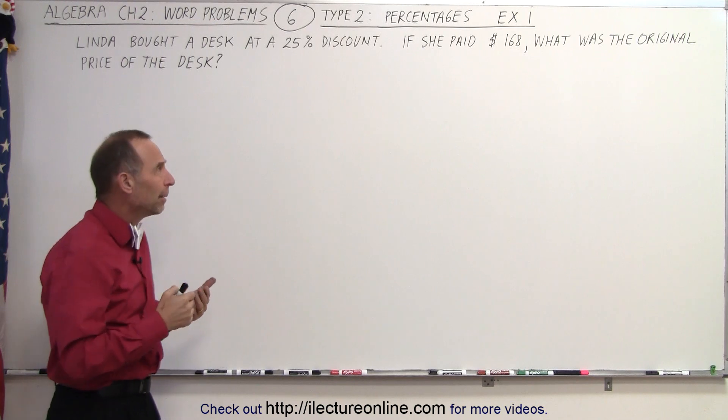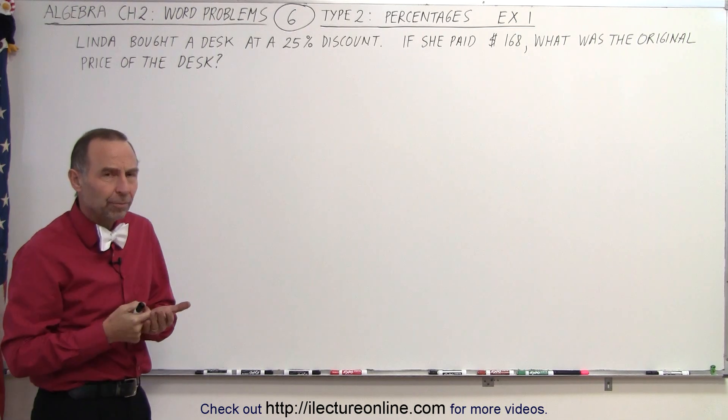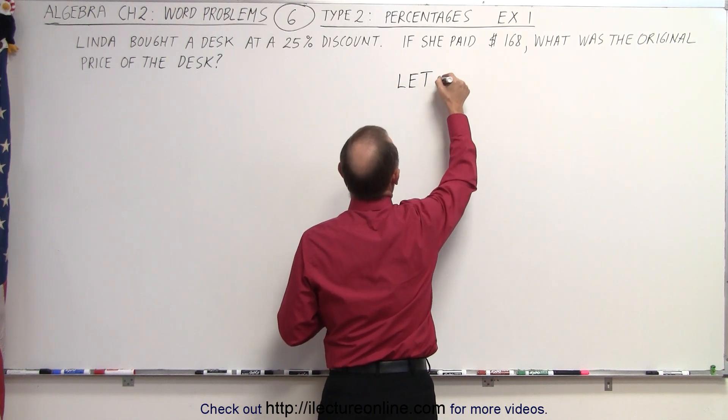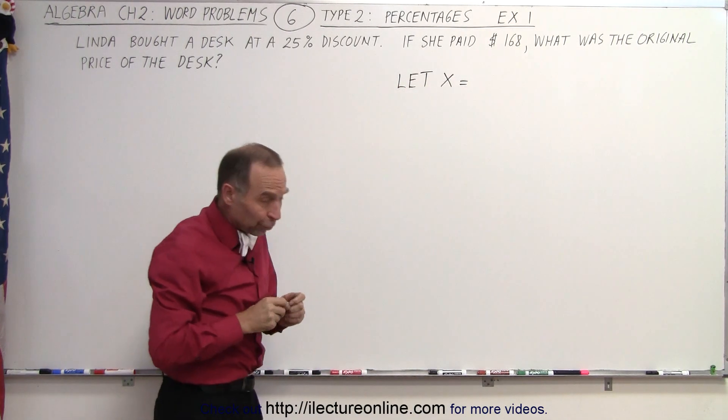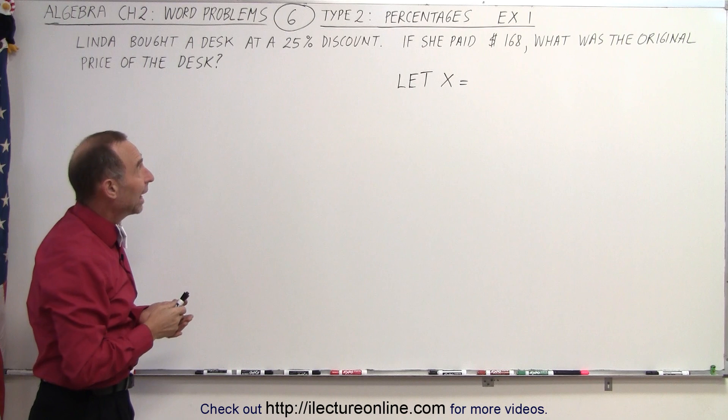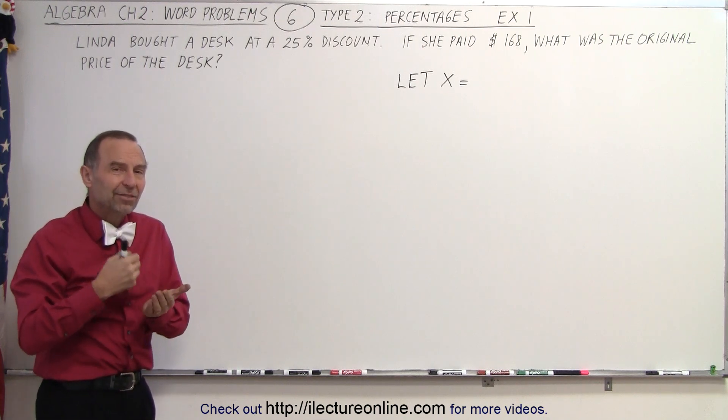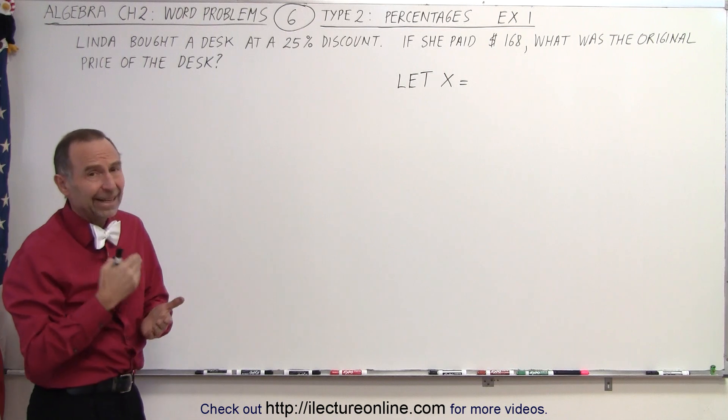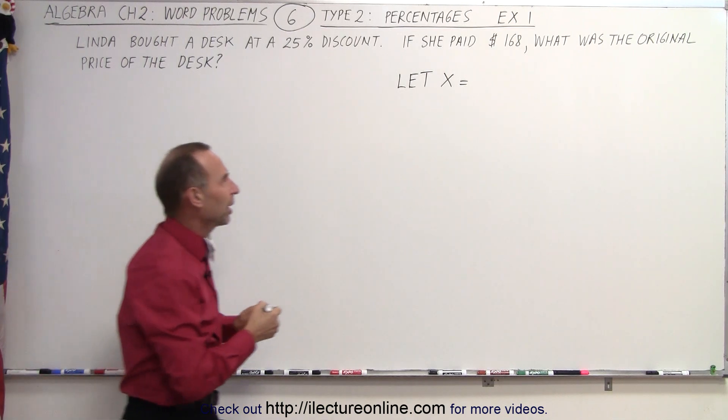So we're going to start the problem by saying let x equal something. Now the question is, what are we going to let x equal? We don't know what the original price is, and we know that the discount is in terms of the original price. So in this case it makes sense to let x equal the original price.